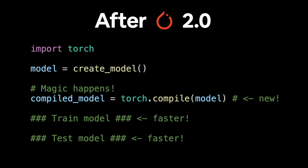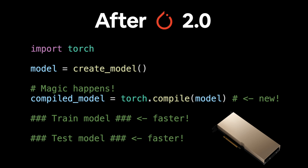In other words, after you create your model, you can pass it to torch.compile to receive a compiled model, and in turn, expect speedups in training and inference on newer GPUs.